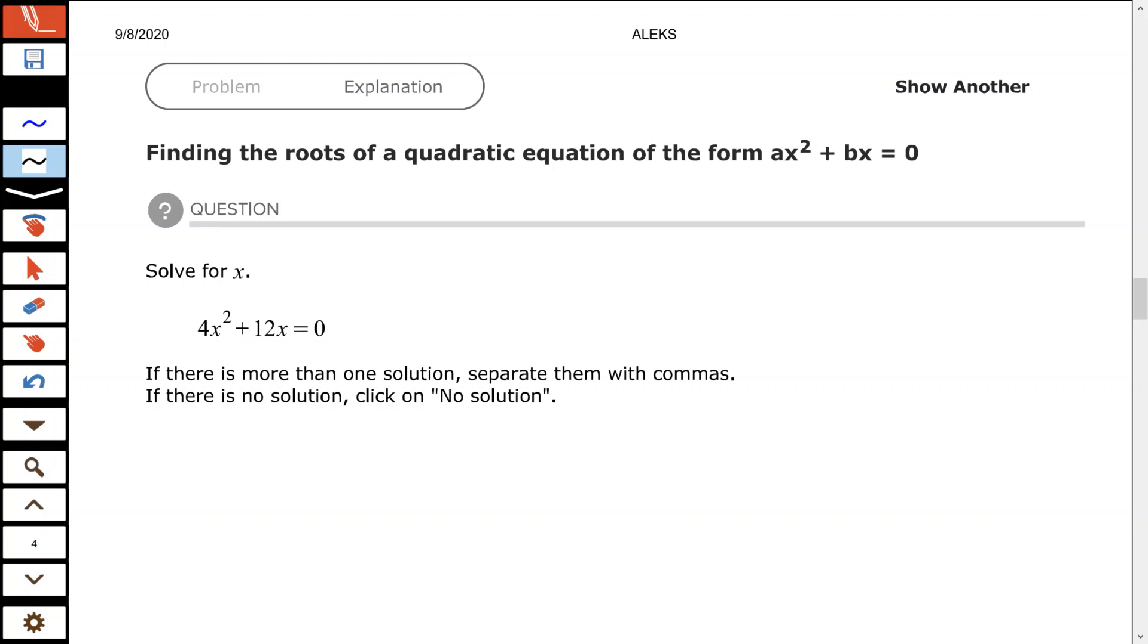Alrighty, hope all is well. Let's take a look at finding the roots of a quadratic equation of the form ax squared plus bx equals zero. There are different ways that you can find the roots. The method that we're going to use in this section is going to be by factoring. Factoring is one of the easiest ways, and all it's asking you to do is solve the equation. When it's asking you to find the roots, it kind of tells you here it says solve for x.